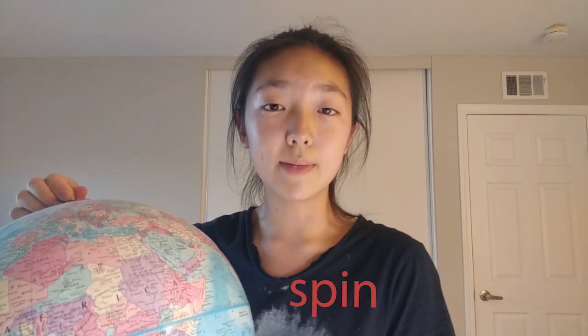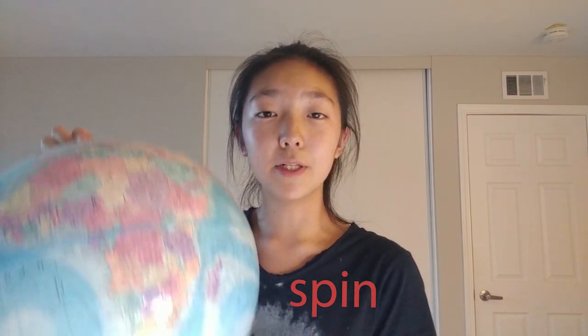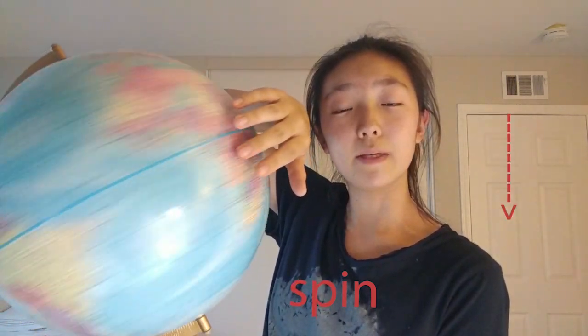The direction of spin can be determined by the direction my thumb is pointing in when I spin the object. So for example, if this globe is spinning this way, the direction of spin will be up, and if it's spinning this way, the direction of spin will be down.